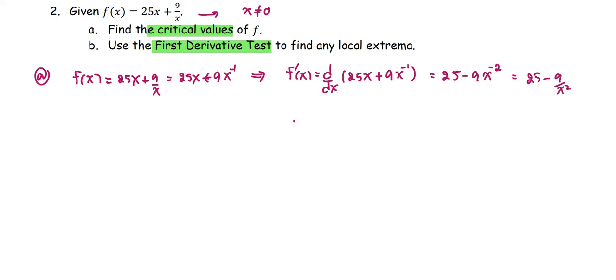And we are going to find the critical values. We call the critical values obtained from two different cases, the case at f prime equals 0 and the f prime undefined. This case, we have the fraction form, so we're going to rewrite 25 minus 9 over x squared as one fraction. 25 means 25 over 1, so we have 25x squared minus 9 all divided by x squared as the simplified form of the derivative critical value.